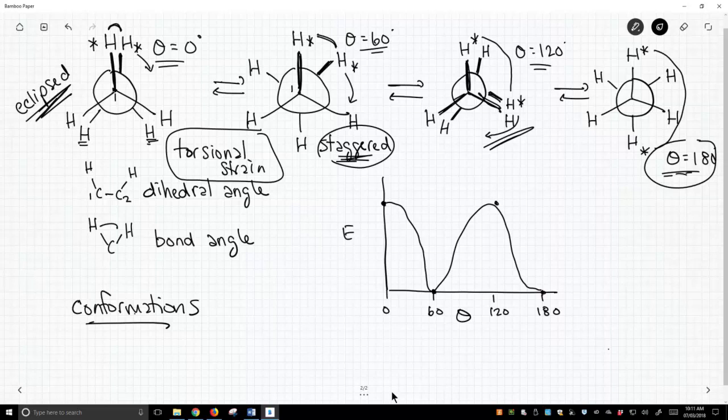Now, what is the energy of this? As it turns out, the energy cost of eclipsing two hydrogens is one kcal per mole. Let's write it down here. This is one kcal per mole.